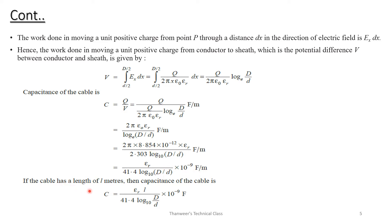If the cable has a length of L meters, then the capacitance of the cable is C equals epsilon_r times L, divided by 41.4 times log base 10 of D over d. This is the derivation for the capacitance of a single core cable.